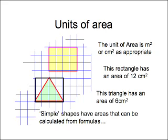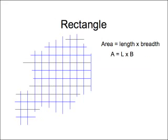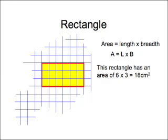Simple shapes have areas that can be calculated from formulas. For instance, the formula for the rectangle is the area equals the length times the breadth, or A equals L times B. So this rectangle has an area of 6 by 3 equals 18 square centimeters.